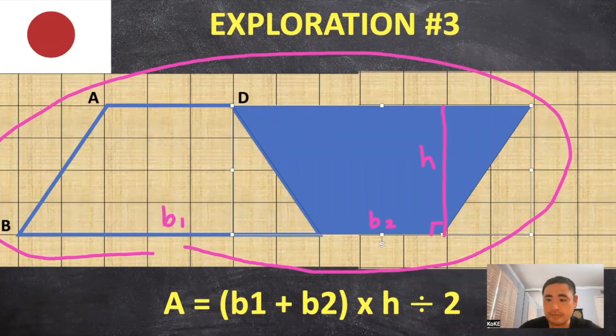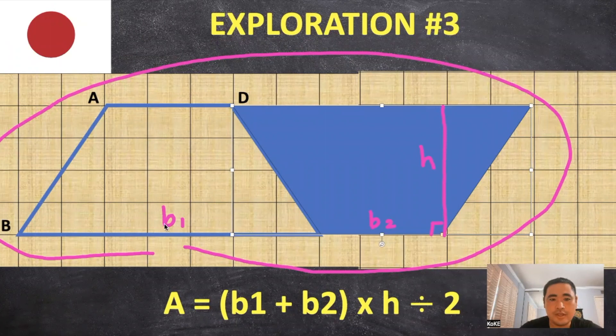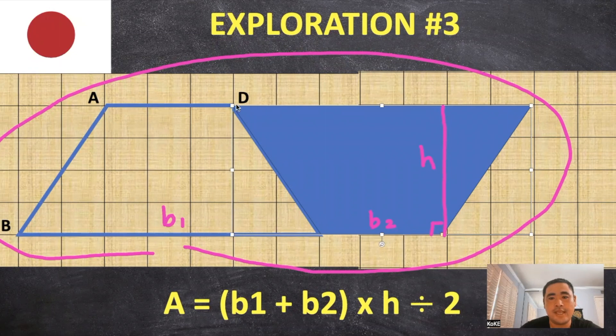And this turns out to be the explanation for the trapezoid formula. So you have your base one right here, and your base two, which is the same as AD, times your height. And that's going to give you the area of this entire parallelogram.